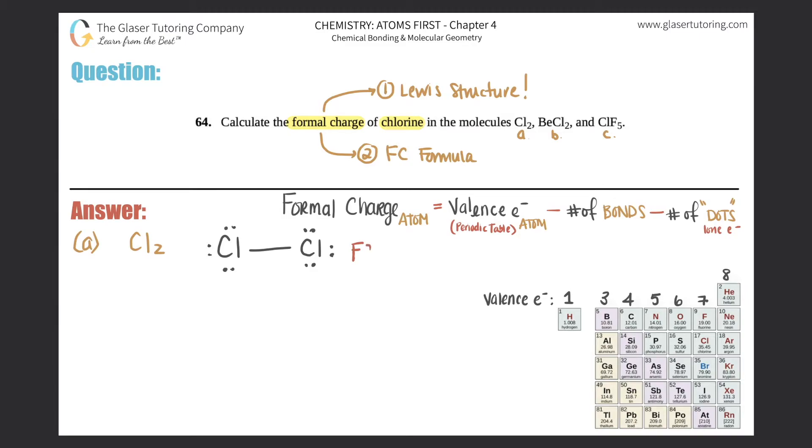Formal charge for chlorine. You always start with your valence electrons, which can be found on the periodic table of that atom. In this case, it's chlorine. So look for chlorine. Chlorine's over here. Chlorine has a valence electron of seven.